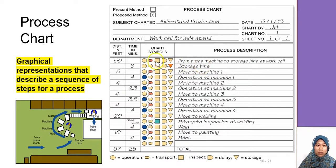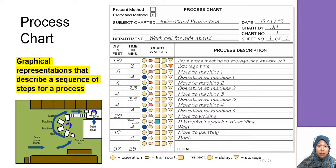From the press machine to the storage bin is a transport, shown by an arrow symbol, with a distance of 50 feet. Materials stay three minutes at the storage bin, then move five feet to machine one, where operation takes four minutes — shown by a circle. Then they move four feet to machine two, where operation takes 2.5 minutes, and the whole process is described step by step.